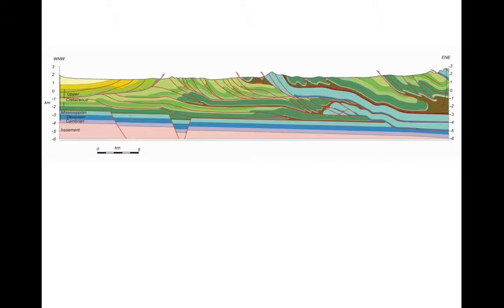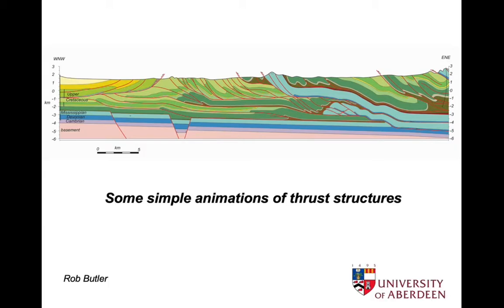At first sight, cross-sections through thrust belts can show bewildering complexity. And this section through the foothills of the Canadian Cordillera in Alberta is no exception. But actually, the individual structures in here are pretty simple. And we can illustrate this through some simple animations of thrust structures that combine to create the complexity we can see in the section.